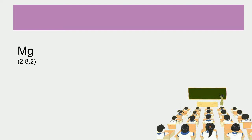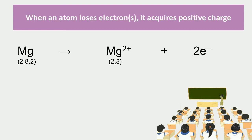Similarly, magnesium with atomic number 12 and electronic configuration 2, 8, 2 can lose 2 electrons in order to have 8 electrons in its valence shell. After losing 2 electrons, magnesium will acquire 2 units positive charge. Here one thing is clear that when an atom loses electrons, it acquires positive charge.